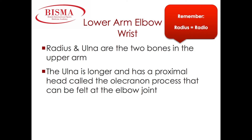Unlike at the elbow, where the ulna is more prominent, the radius is far more prominent at the wrist. Here it articulates with two of the carpal bones to form a synovial joint that allows flexion, extension, abduction, and adduction. The ulna has a very small connection at the wrist and therefore is not involved in movement.